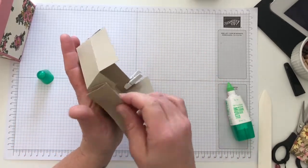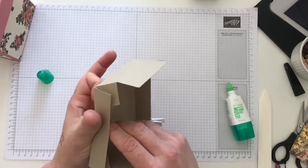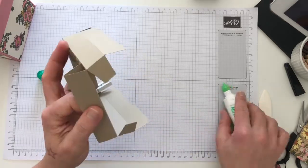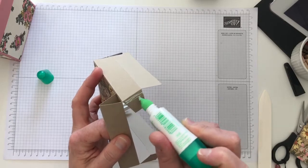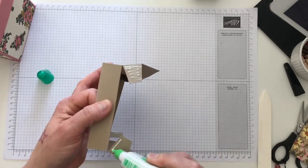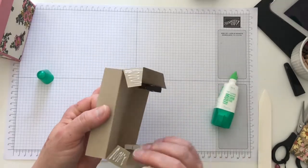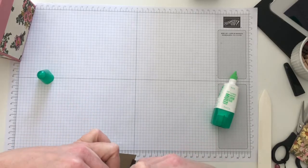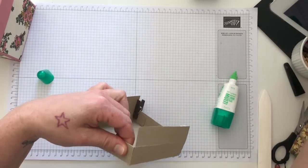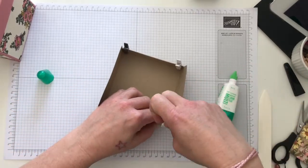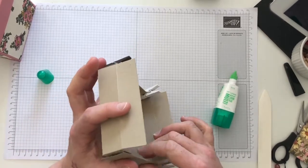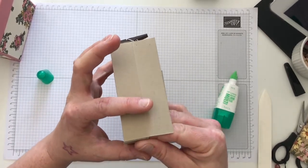Do the same there. Flip that piece back. Then I'm going to add glue on both, just to make it easier for myself. One, and then two.